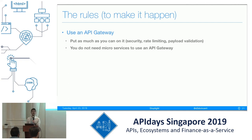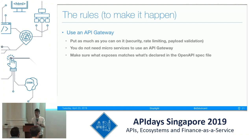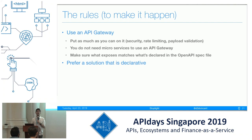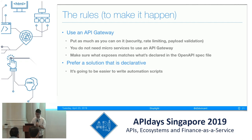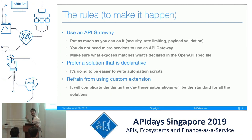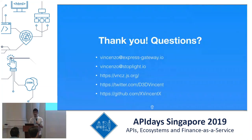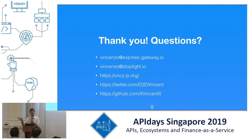Importantly, you don't need microservices to use an API gateway — it's a thing you can use in any case, and most of the time it makes sense. Make sure it exposes exactly what is declared in the OpenAPI specification file, because the translation will be way easier. Prefer a solution that is declarative — configured with a single file telling it what to do — rather than gateways configured only with API calls imperatively, which is not helping. Refrain from using custom extensions, because it will complicate things when OpenAPI catches up and you'll need translation layers. If you're having the same issues I'm having with lack of OpenAPI runtime support, I encourage you to write to me — I'd like to know your story and understand if I'm going in the right direction.